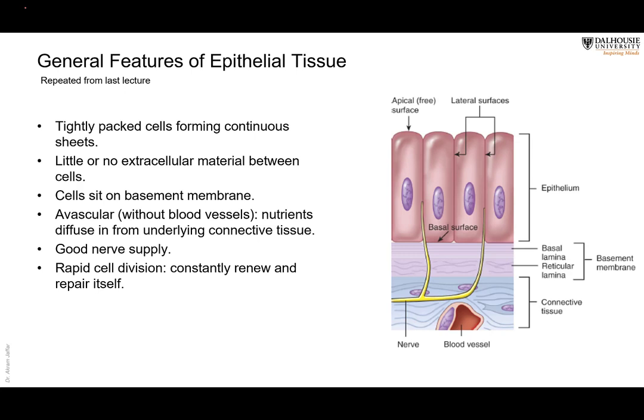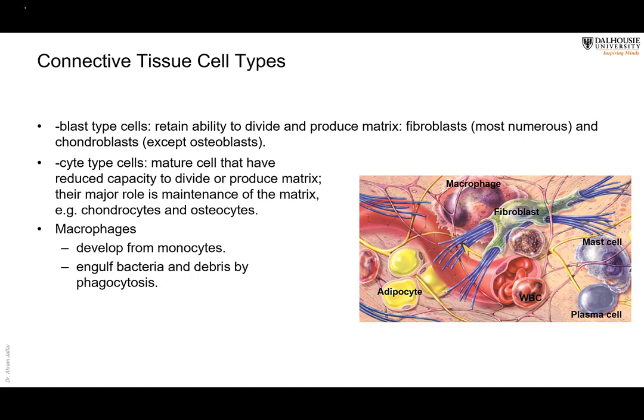To summarize: connective tissue has cells and a matrix, and the matrix has ground substance and fibers. We have different types of cells. Some have the suffix '-blast,' like chondroblasts and fibroblasts, which means they produce. Fibroblasts produce fibers and are the most abundant type of connective tissue cell.